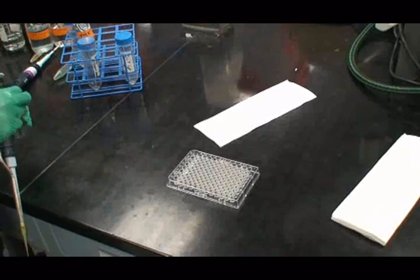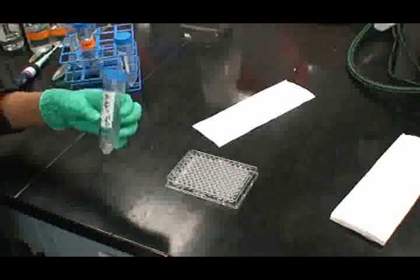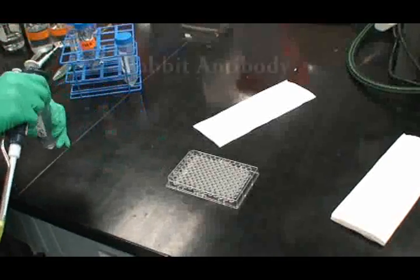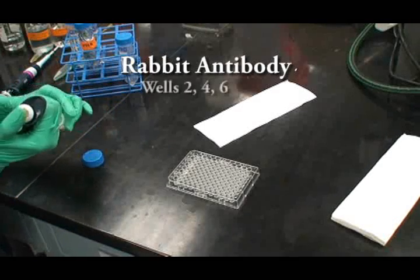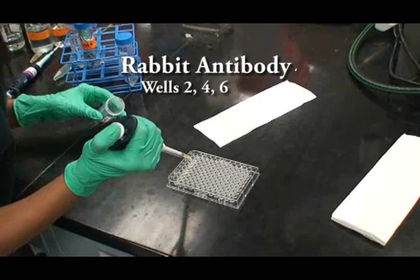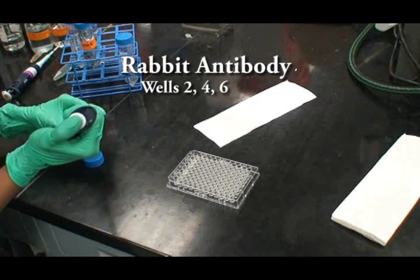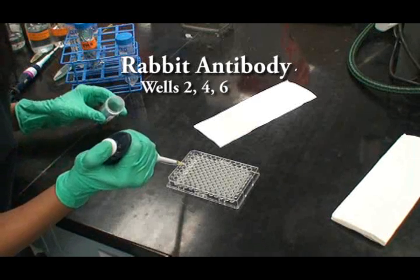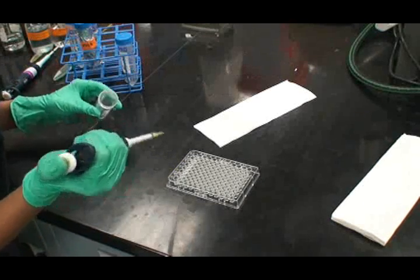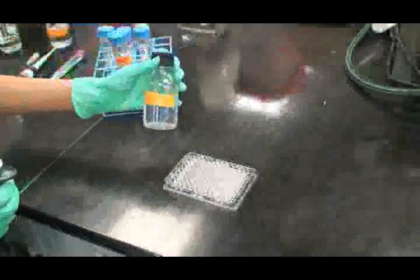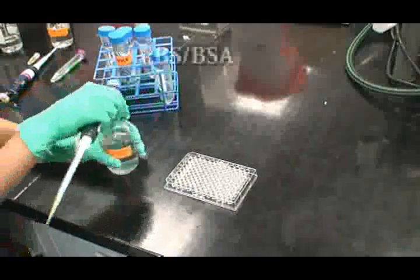Add 100 microliters of diluted rabbit antibodies to wells 2, 4, and 6 of each plate. Add 100 microliters of PBS-BSA to wells 1, 7, and 8.